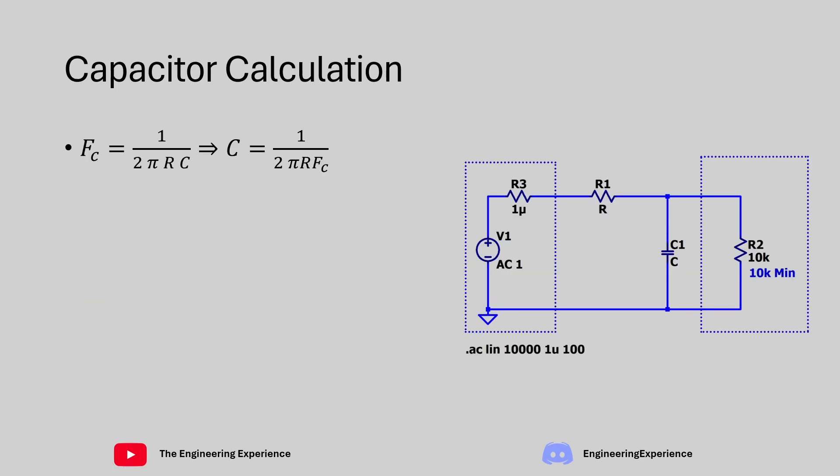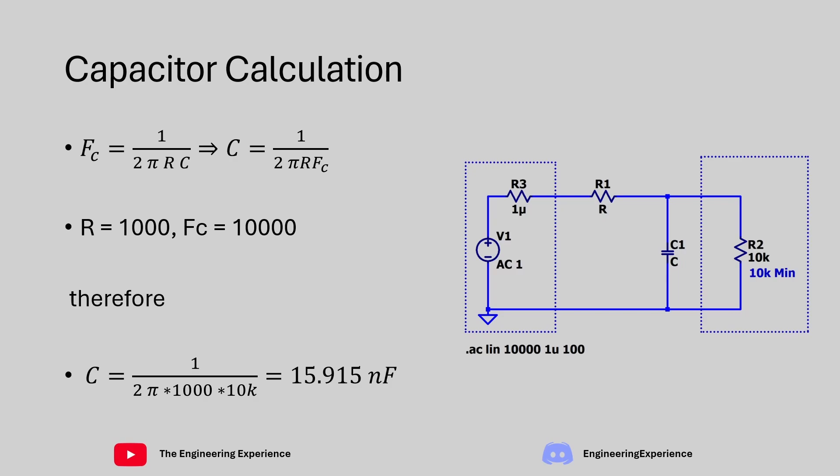The cutoff frequency for a low-pass filter is calculated using fc = 1 / (2π RC). We have fixed R at 1 kOhm and the cutoff frequency is 10 kHz. Rearranging to get C: C = 1 / (2π × 1 kOhm × 10 kHz), which gives us a capacitance of 15.915 nF. So the resistance is 1 kOhm and the capacitance is 15.915 nF.